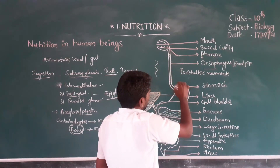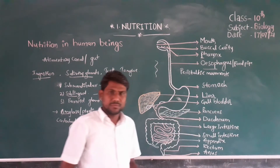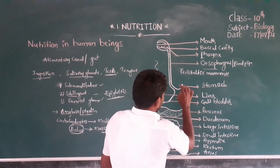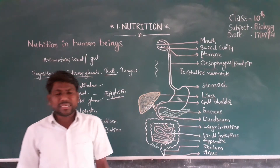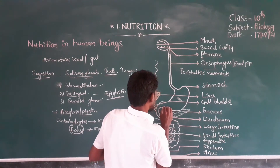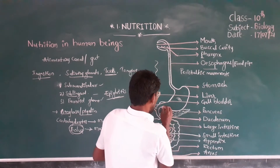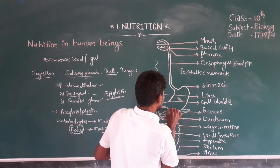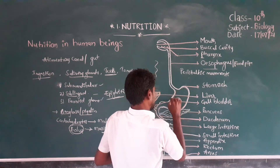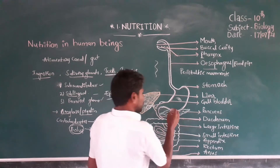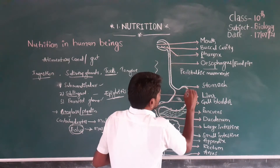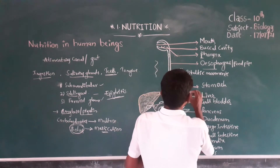The food particle next reaches the stomach. The stomach is a sac-like structure and it is covered by a mucous membrane. This mucous membrane consists of glands called gastric glands. These gastric glands contain two types of substances: first, HCl (hydrochloric acid), and second, the enzyme pepsin.